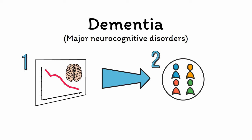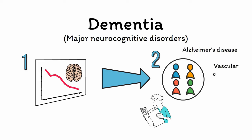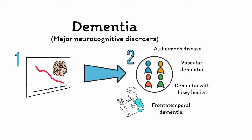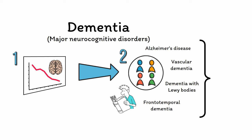Asking the second question — what type of dementia is it — relies upon a good understanding of the different forms that dementia can take. The main forms to be aware of are Alzheimer's disease, vascular dementia, dementia with Lewy bodies, and frontotemporal dementia. It's also possible for someone to have multiple forms of dementia at the same time, which is known as mixed dementia.